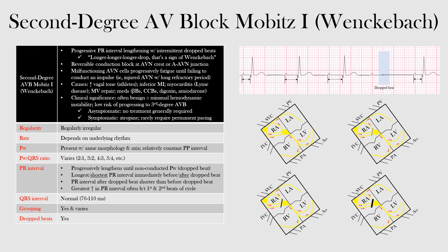In general, second-degree AV blocks suggest that the P waves are sometimes related to the QRS complexes. This is because there are dropped beats that occur. There are two forms of second-degree AV block: the first is second-degree AV block Mobitz type 1, or Wenckebach, and the second is second-degree AV block Mobitz type 2.